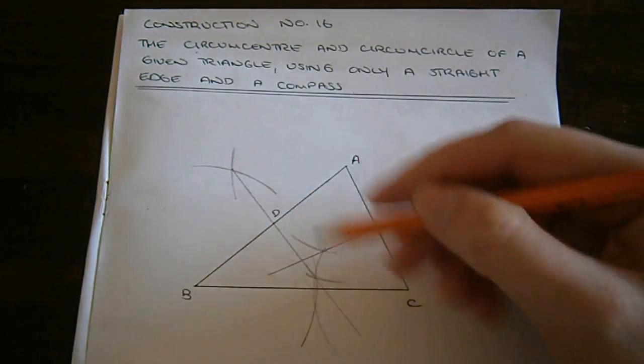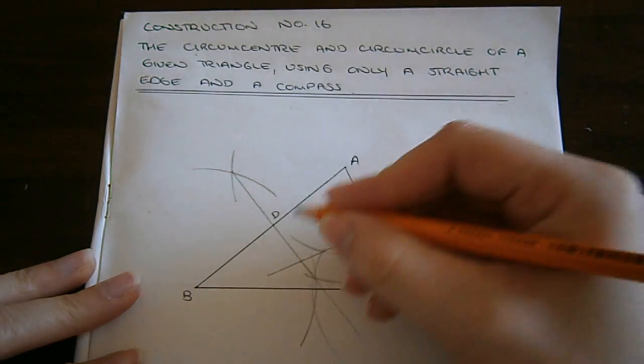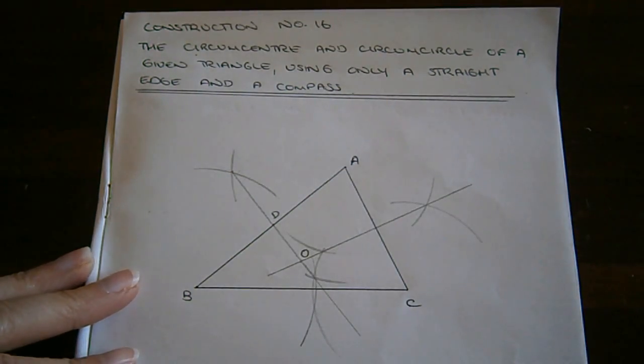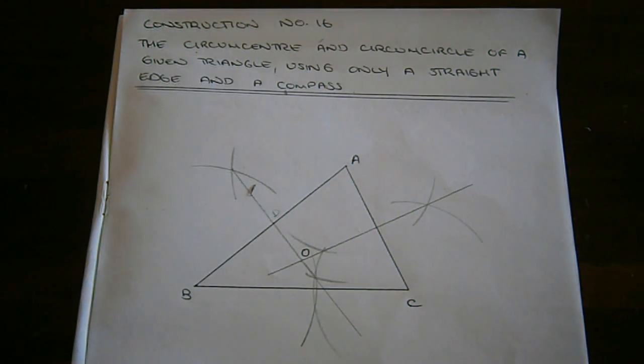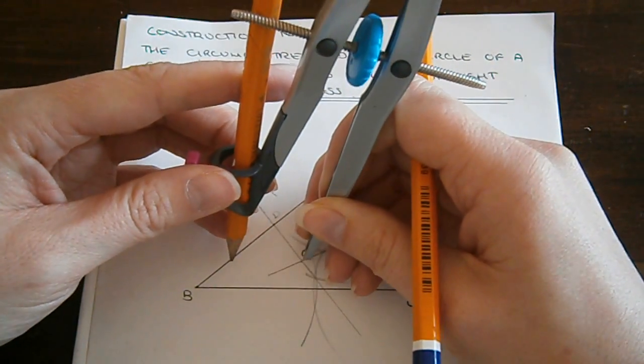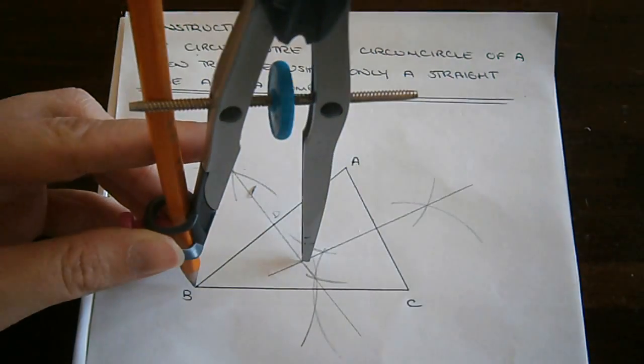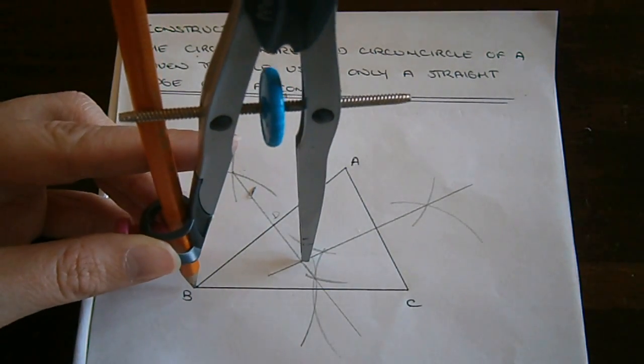The intersection of these two lines here is my circumcenter. Let's call it O. And from here I will draw my circumcircle. So I have my circumcenter and to draw the circumcircle I put my compass point on this point O and I put my pencil on any one of the three vertices of the triangle.